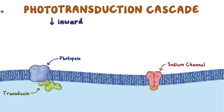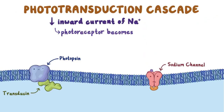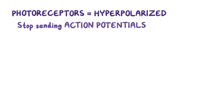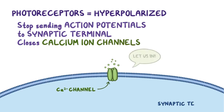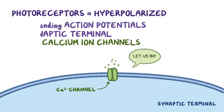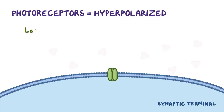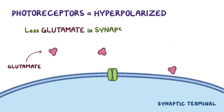This decreases the inward current of sodium entering the cell and the photoreceptor becomes more negative, or hyperpolarized. When photoreceptors are hyperpolarized, they stop sending action potentials down to the synaptic terminal, and that closes the voltage-gated calcium ion channels near the synaptic terminal. As a result, there's less of the excitatory neurotransmitter glutamate released into the synapse between the photoreceptor and bipolar cell.